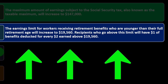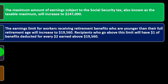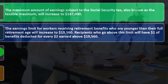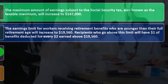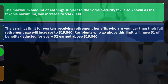The earnings limit for workers receiving retirement benefits who are younger than their full retirement age will increase to $19,560. Recipients who exceed this limit will have one dollar of benefits deducted for every two dollars earned above $19,560.